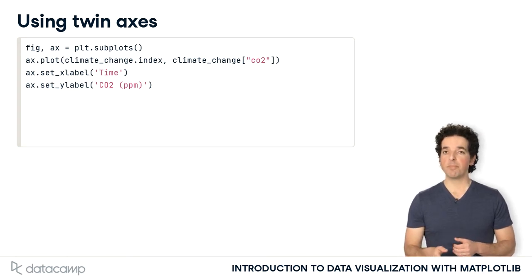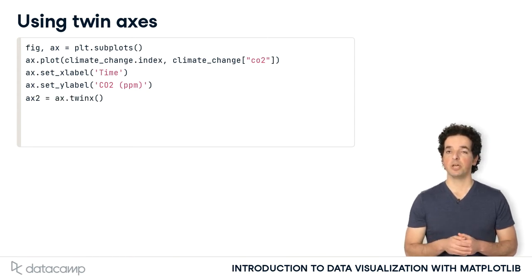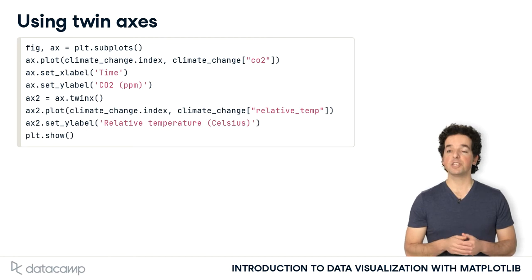Again, we start by adding the first variable to our axes. Then, we use the TwinX method to create a twin of this axes. This means that the two axes share the same x-axis, but the y-axis are separate. We add the other variable to this second axis object and show the figure.